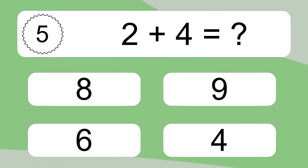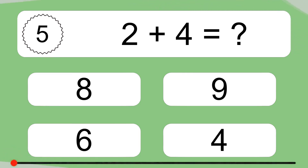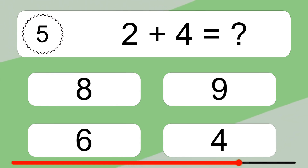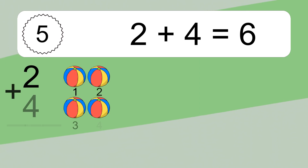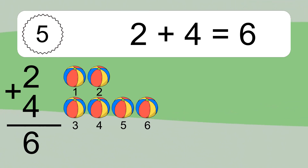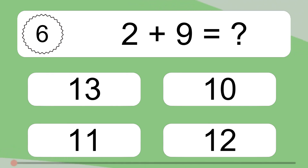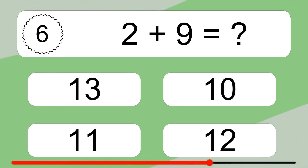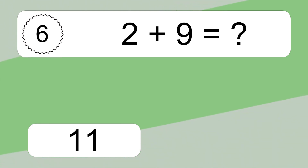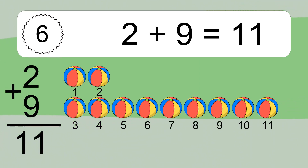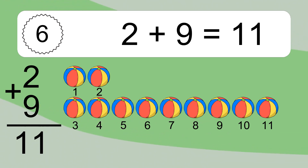2 plus 9 equals what? 2 plus 4 equals 6. Let's count it: 1, 2, 3, 4, 5, 6, 7, 8, 9, 10, 11.